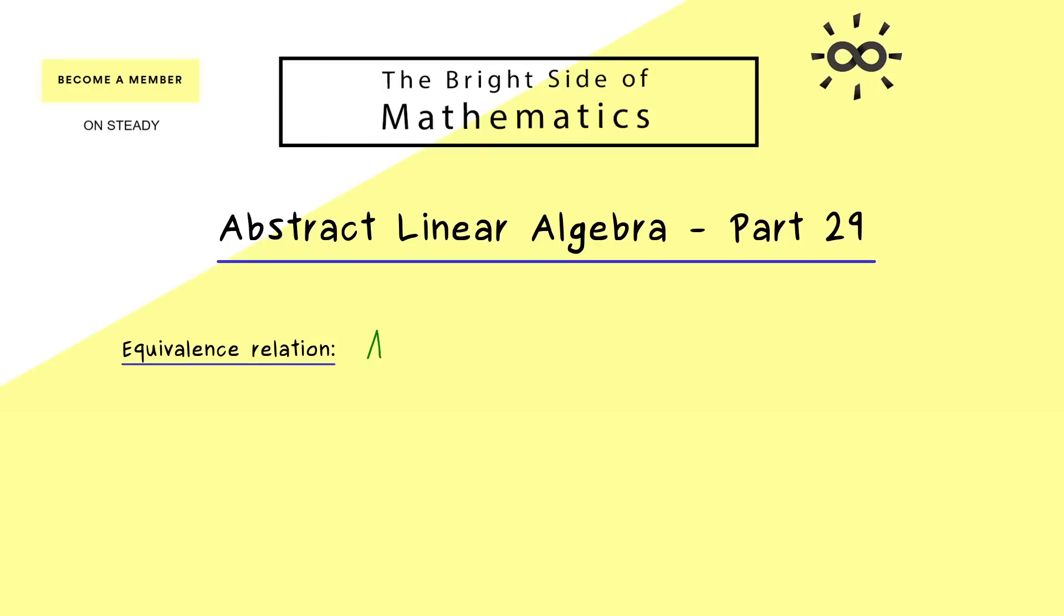Indeed we have an equivalence relation for matrices of the same size. So in general we could say that we have two matrices A and B of size m times n. And these two matrices can be equivalent, which we denote by a tilde in between. And as we have learned, this means that they can both represent the same linear map.